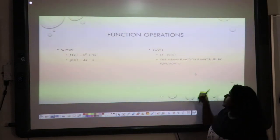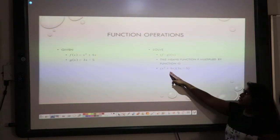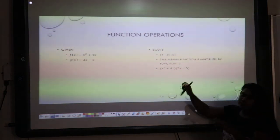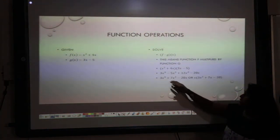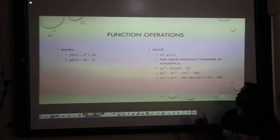This means that function f is multiplied by function g, so I take those two functions, I do a simple foil, and I get my answer here, it is simplified, and in its factored form.